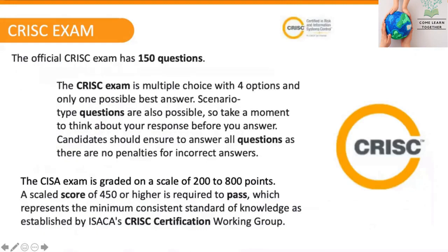The official CRISC exam has 150 questions with four options each. Grading is on a scale of 200 to 800 points, and a scaled score of 450 or higher is considered passing and allows you to obtain the CRISC certification.